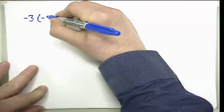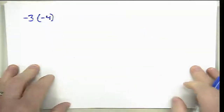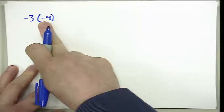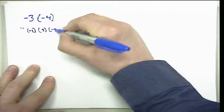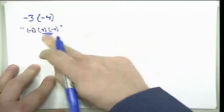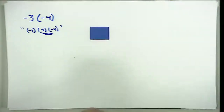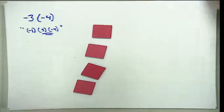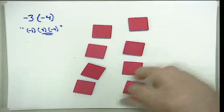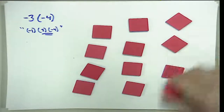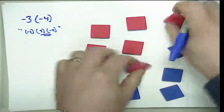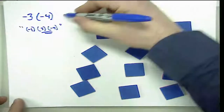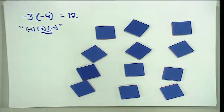If we had two negatives multiplied — say negative three times negative four — we interpret this as the opposite of three groups of negative four. We factor off the negative one, handle three groups of negative four: one group of negative four, a second group, and a third. Three groups of negative four gives me negative twelve, but we want the opposite, which is positive twelve.